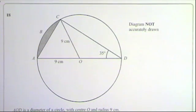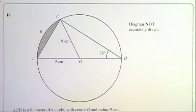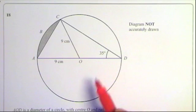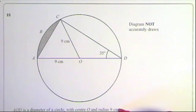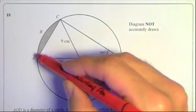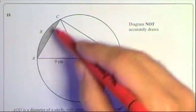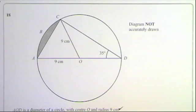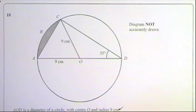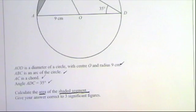Question 18. Let's check the information given. AOD is the diameter of the circle, radius 9 marked. ABC is an arc of the circle. AC is a chord. Angle ADC equals 35 degrees. They're all marked on the diagram. Calculate the area of the shaded segment and give your answer to three significant figures.